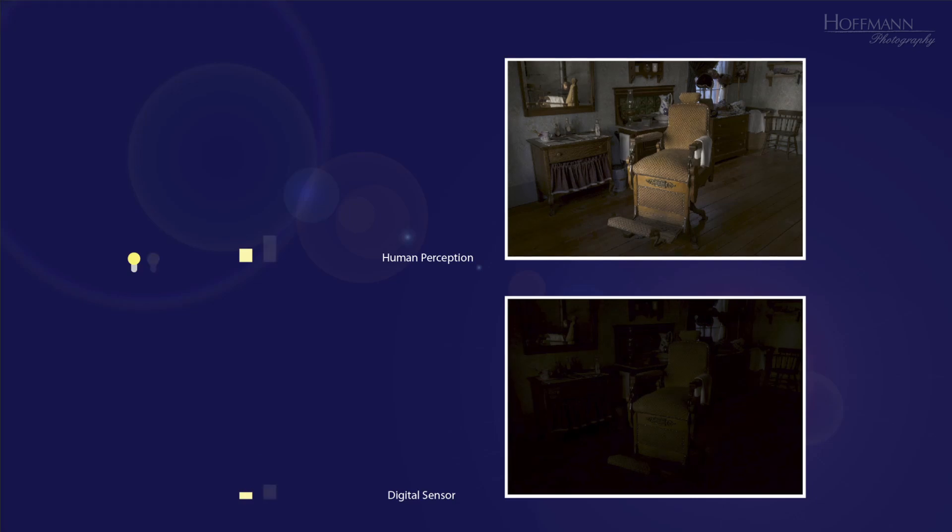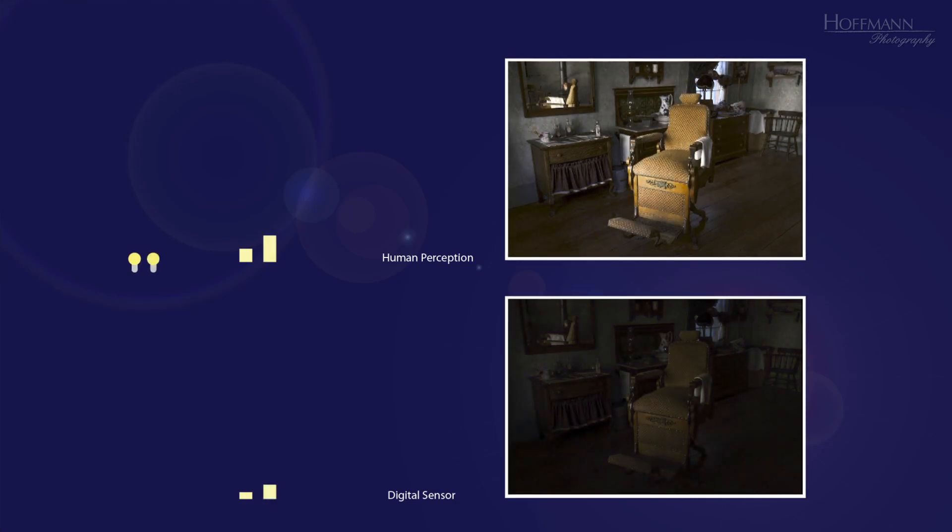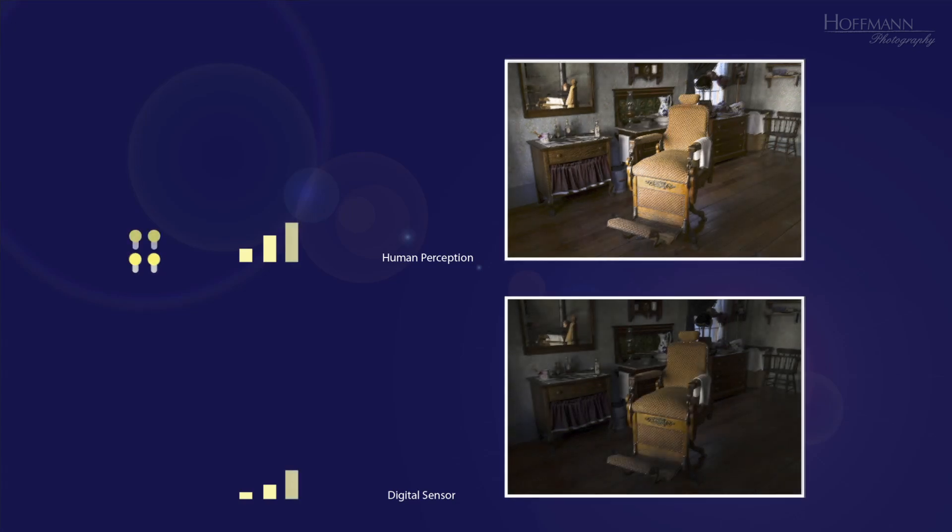Let's switch on a second light bulb. Now we have twice the amount of light. Our brain perceives twice the brightness as just a little bit brighter, while the sensor outputs exactly twice the brightness. Let's double the amount of light again. As before, our brain perceives this as a little brighter, but not as twice as bright, while the sensor doubles the brightness output, corresponding to a vertical bar that is twice the height than the previous one.